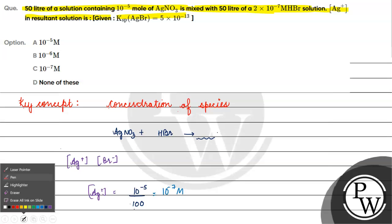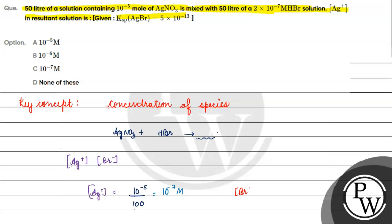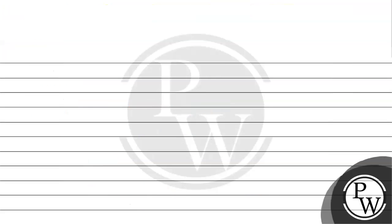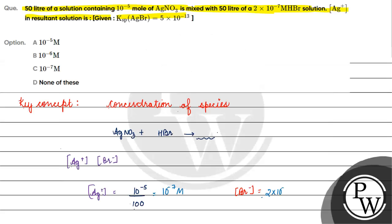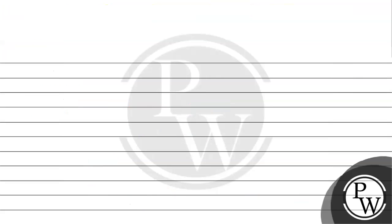Next, we calculate the bromide ion concentration. First, we take the number of moles of bromide ion by multiplying molarity into volume: 2 into 10 raised to the power minus 7 into 50. This gives the number of moles of bromide ion. Dividing by total volume of 100 liters, we get the concentration of bromide ion as 10 raised to the power minus 7 molar.